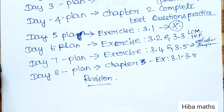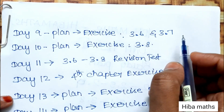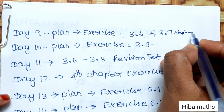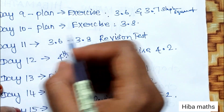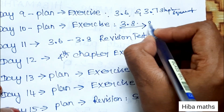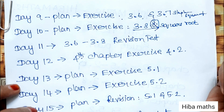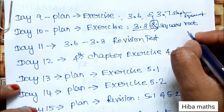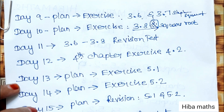If you have a break, you will have a recall. If you have a question, understand what formula to apply. Day 8 is exercise 3.5. Day 9 is exercises 3.6 and 3.7 — simplification and square root. Day 10 is exercise 3.8, which covers the square root method — expect a question on this.